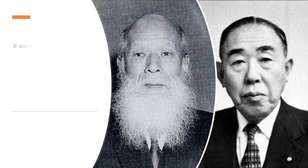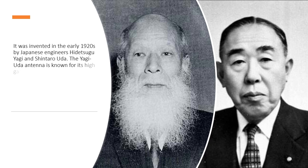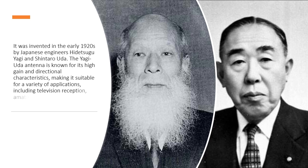It was invented in the early 1920s by Japanese engineers Hidetsugu Yagi and Shintaro Uda. The Yagi-Uda Antenna is known for its high gain and directional characteristics, making it suitable for a variety of applications, including television reception, amateur radio, and point-to-point communication.